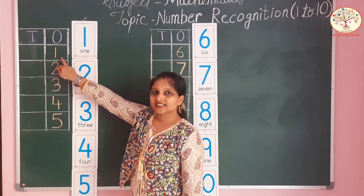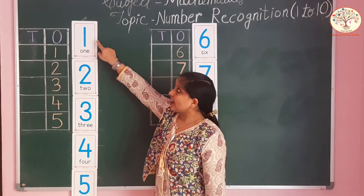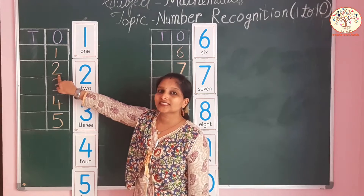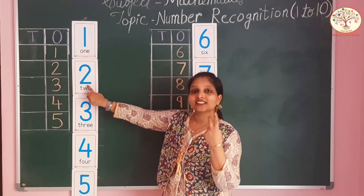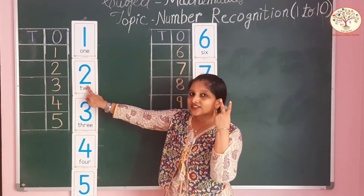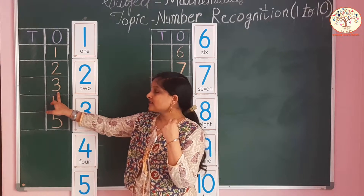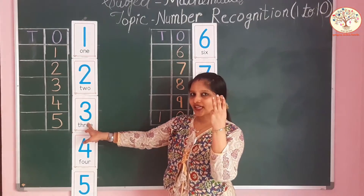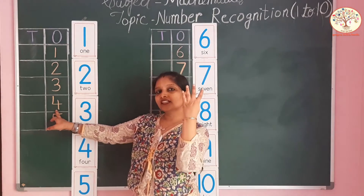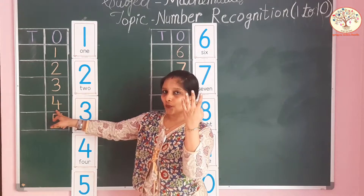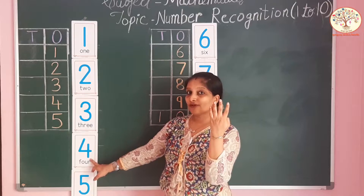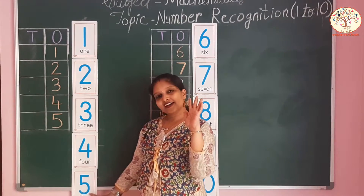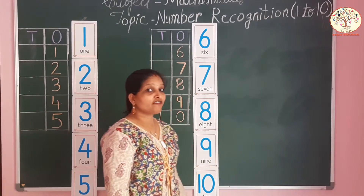Which number is this? Number 1. After number 1 comes number 2. After number 2 comes number 3. After number 3 comes number 4. After number 4 comes number 5.